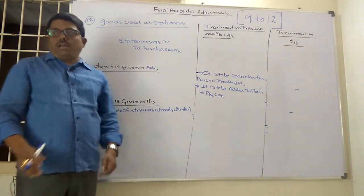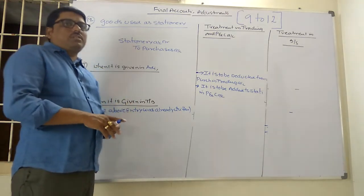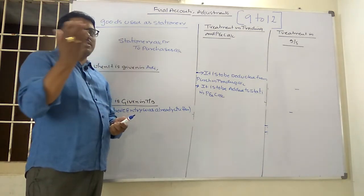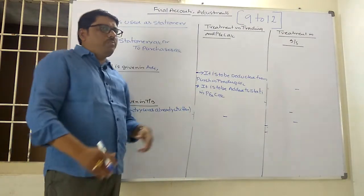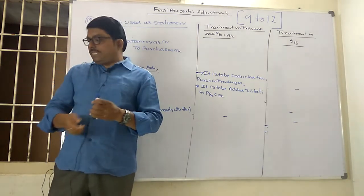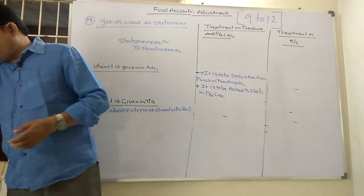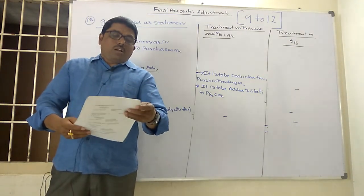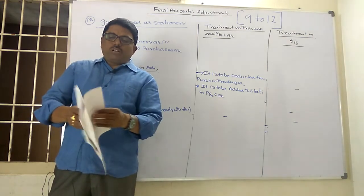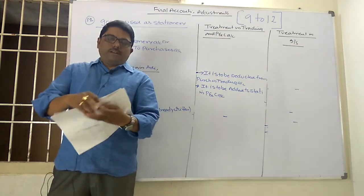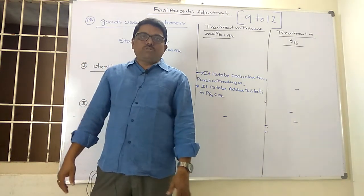Whenever goods used as stationery is given in the trial balance, the above entry — Stationery to Purchases — was already recorded and posting is already done. Stationery has already been added and purchases have already been reduced, so you need not do anything extra. Today we discussed 4 important adjustments: closing stock, goods withdrawn for personal use, free samples, and goods used as stationery. We have now discussed 12 adjustments in total, and we will discuss more in the next class. If you like my videos please subscribe and share with your friends.